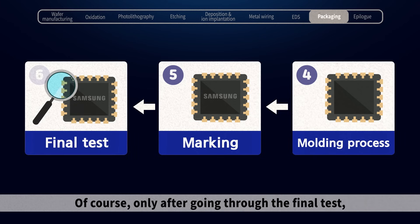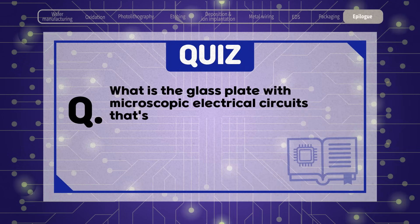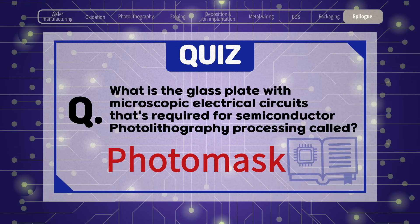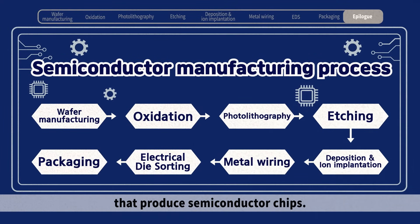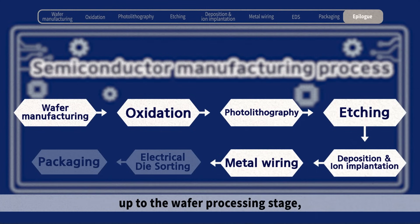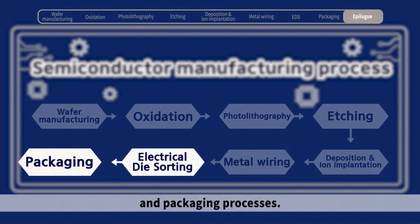Of course, only after going through the final test will it become a finished product. Today, we learned about the essential processes that produce semiconductor chips. These complex processes can be separated into the pre-process up to the wafer processing stage, and the post-process which contains the testing and packaging processes.